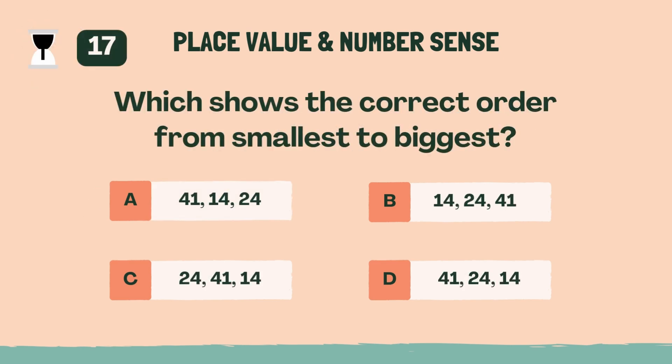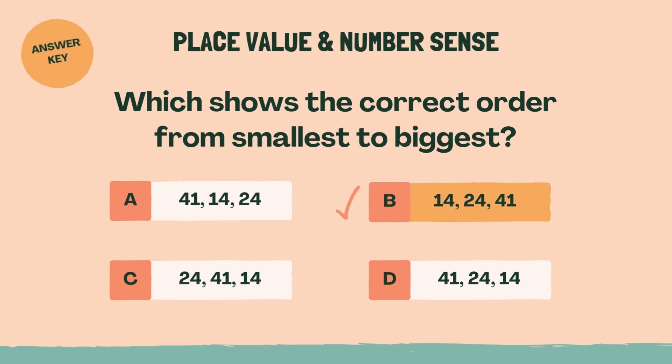Which shows the correct order from smallest to biggest? The answer is B: 14, 24, 41.